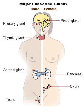A number of glands that signal each other in sequence are usually referred to as an axis, for example, the hypothalamic-pituitary-adrenal axis.